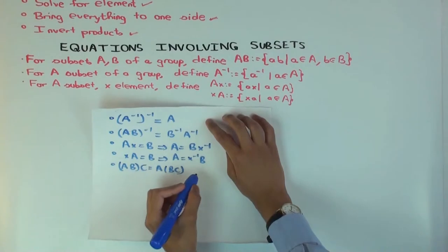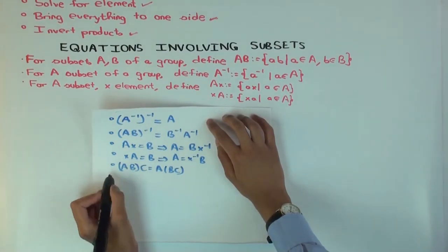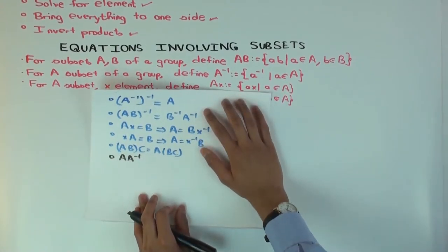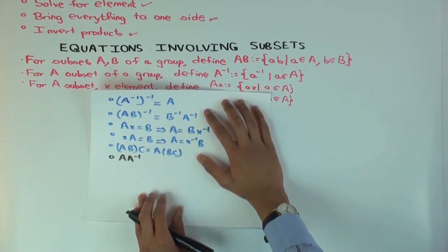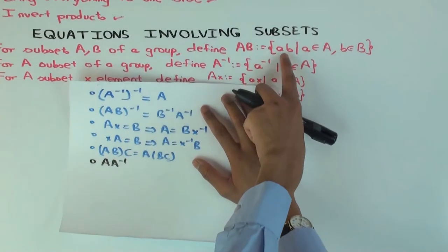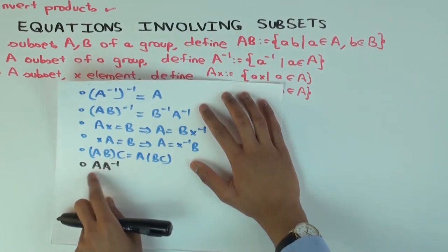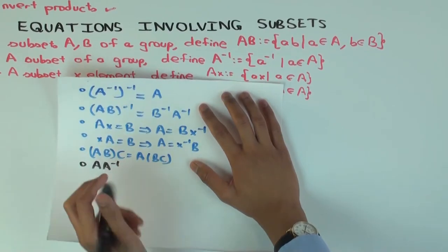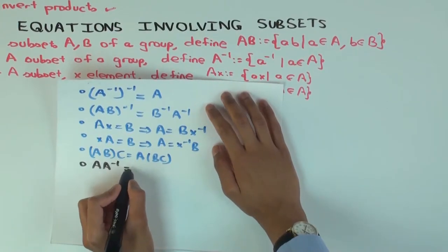Now, let's try some more. What is AA inverse? For a subset A, what is AA inverse? The identity element. Well, it contains the identity element, but it could have other stuff. Because remember, AB is defined as a set of all products of things in A and things in B. So A is a subset, A inverse is a subset which contains the inverse of things in A. But when you multiply subsets, you could be multiplying something in A and the inverse of something else in A. So this need not be the identity element. So this is actually what is it? It's A1, A2 inverse, where A1, A2 are in A.